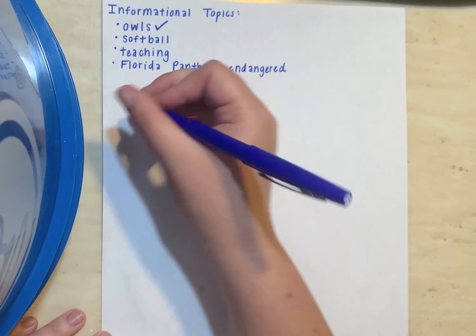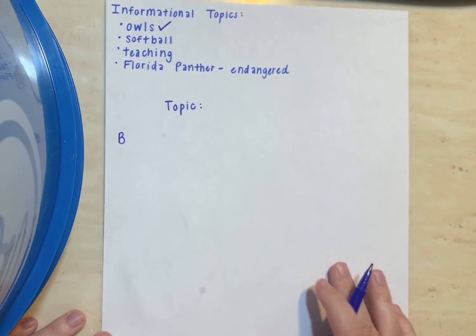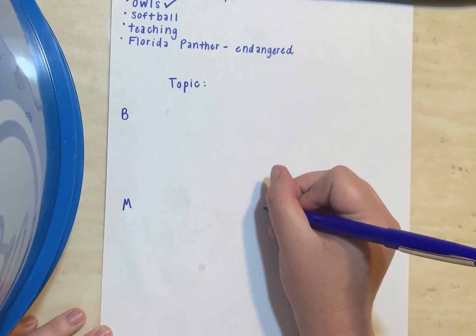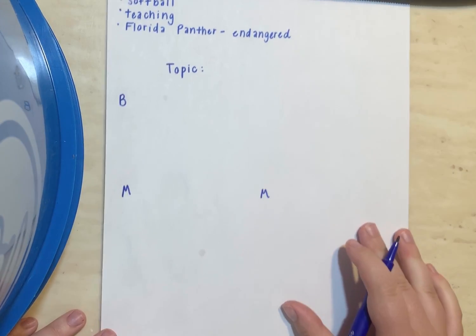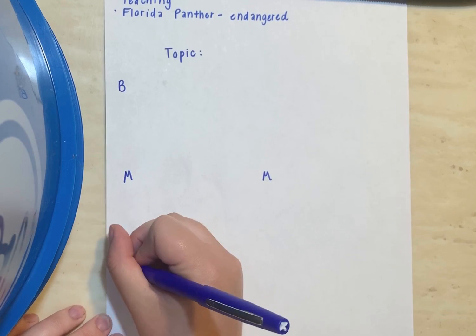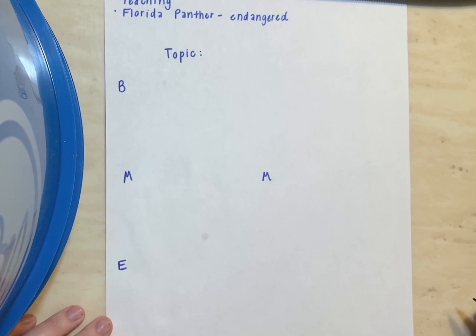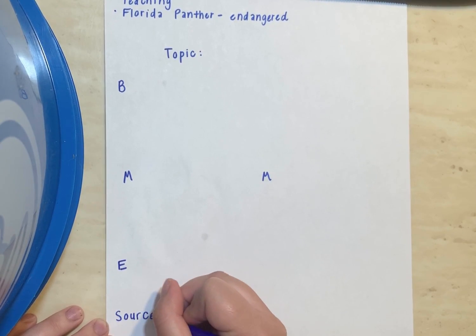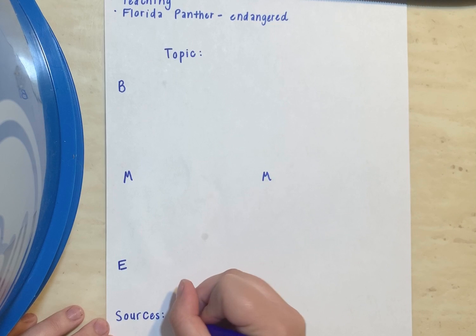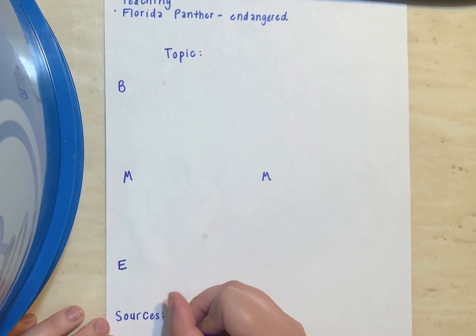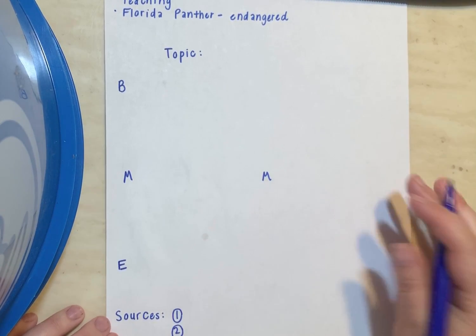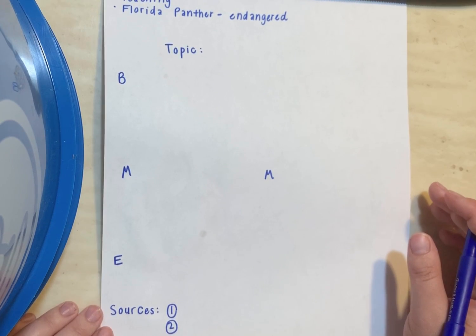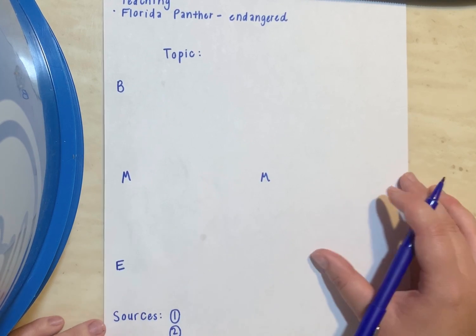Then we have our B for beginning, M, M — two middles — and E for end. At the very bottom we have our sources. In my case, I ended up having two sources. You don't need to do more than two. As long as you have at least two, you're okay if you're researching something.